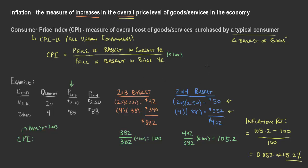There are a few things about the basket of goods we need to be aware of. A few problems that we run into with CPI: the first problem is substitution bias. Substitution bias is one of the problems that might become immediately apparent to you — for instance, if the price of shoes increases, or more specifically, the price of tennis shoes.